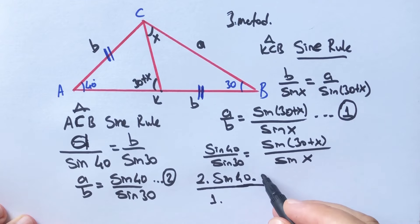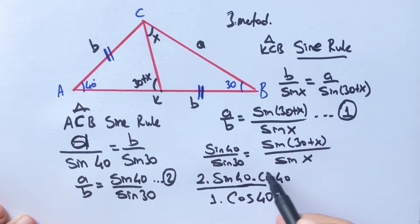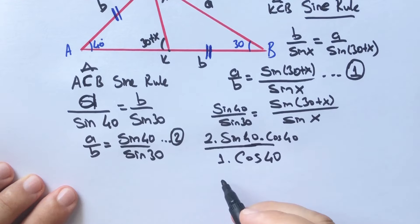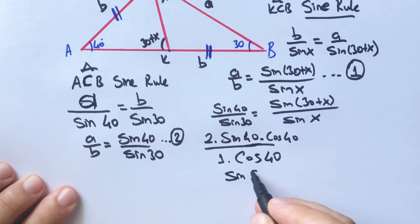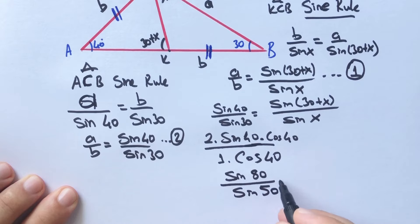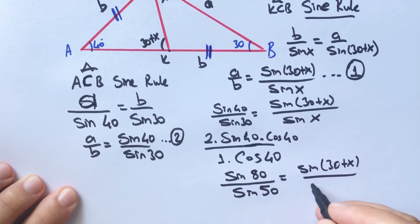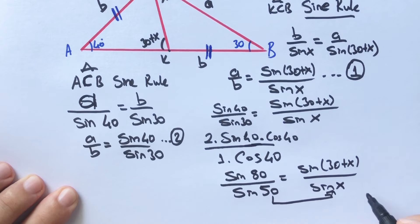If we multiply numerator and denominator by cos 40, the result does not change, and we can write sin 80 instead of 2 sin 40. Then we can write sin 50 instead of cos 40. This gives sin(30 + X) over sin X, and therefore X equals 50 degrees.